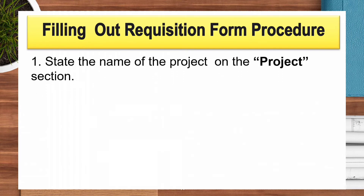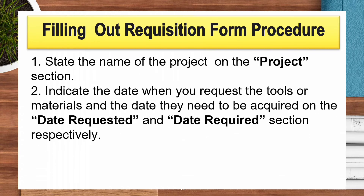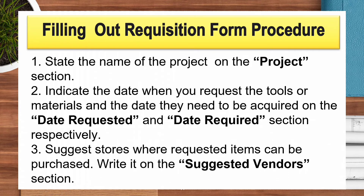The following are the procedures in filling out the requisition form. One, state the name of the project on the project section. Two, indicate the date when you request the tools or materials and the date they need to be acquired on the date requested and date required section respectively. Three, suggest stores where requested items can be purchased — write it on the suggested vendor section.